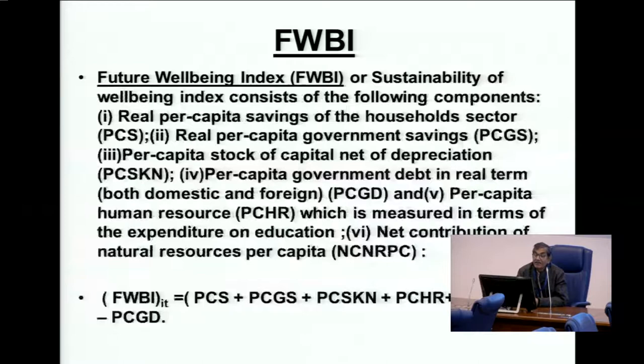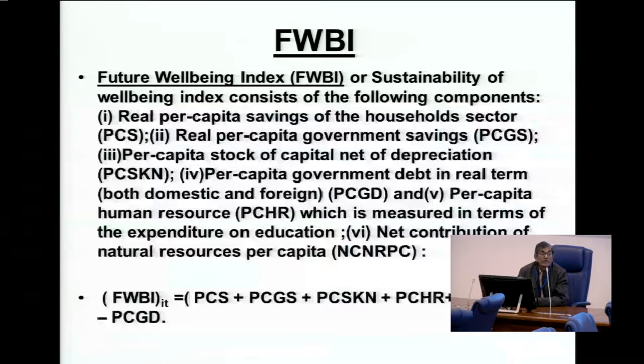The future well-being index considers the real per capita savings, per capita government savings, per capita stock of capital net of depreciation, per capita human resources measured from the cost side as total expenditure on education at the primary, secondary, and tertiary levels, and the net contribution of natural resources net of environmental cost, where environmental cost is assumed to be $20 US dollars per tonne of CO2 emission.